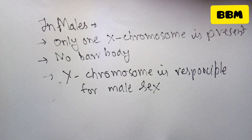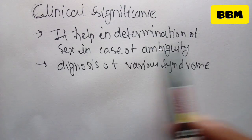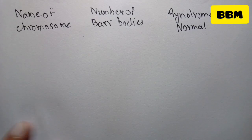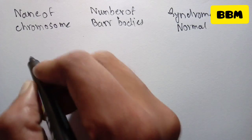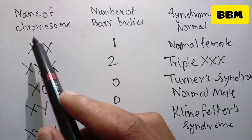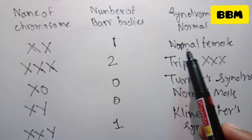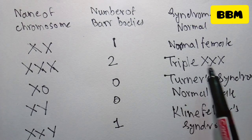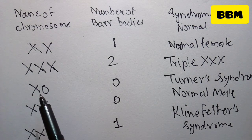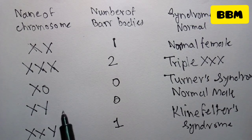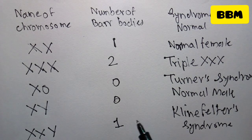This helps in determination of sex in cases of ambiguity and diagnosis of various syndromes. The number of Barr bodies corresponds to the karyotype: normal female (XX) has 1 Barr body; Triple X (XXX) has 2 Barr bodies; Turner syndrome (XO) has 0 Barr bodies; normal male (XY) has 0 Barr bodies; Klinefelter syndrome (XXY) has 1 Barr body.